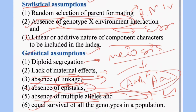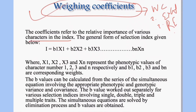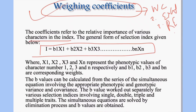After fulfilling all assumptions, there are three main steps for construction of selection indices: weighing coefficient, expected genetic advance, and relative efficiency. Weighing coefficients refer to the relative importance of various characters in the index. The equation is: I = v1·x1 + v2·x2 + v3·x3 + ... where x1, x2, x3 represent phenotypic values of characters, and v1, v2, v3 are the corresponding weights.